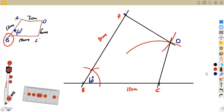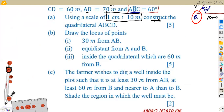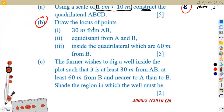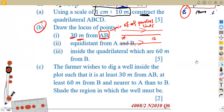Indicate the measurements: 6 cm for CD and 7 cm for AD. Now let's check our questions. Part one asks us to construct the locus of points 30 meters from line AB. A distance from a line gives us a pair of parallel lines — 30 meters on each side of AB.